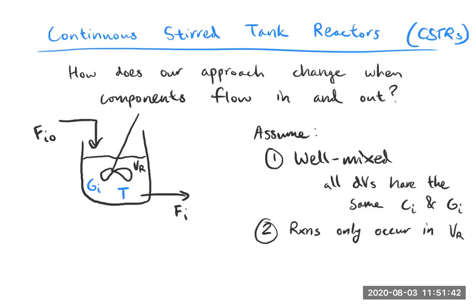If you had two separate streams of reactants come into a vessel, encounter one another, and start reacting, you might wonder why they wouldn't keep reacting in the outstream. In reality they might not — maybe in your volume you have a catalyst that doesn't flow out, or the temperature quickly drops, or you encounter another unit operation that effectively turns off the reaction. So there's no reaction happening in the outstream or the mixed incoming stream — only in the reactor volume.